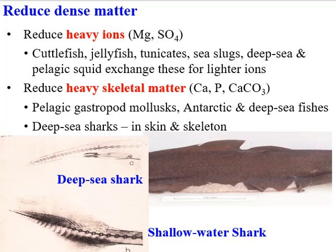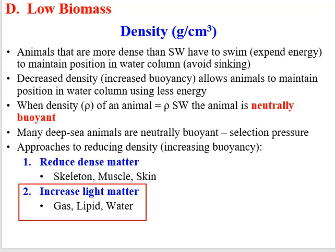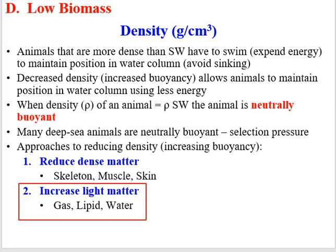So reduction of heavy matter — whether that's ions, skin, or skeleton — all these things increase buoyancy, help obtain neutral buoyancy, and help save energy. These are all very common adaptations found in deep sea organisms. Another thing that goes a long way toward increasing buoyancy and making you neutrally buoyant — so you can float and save energy, hang around in the water column until you come across something to eat — is increasing light matter.